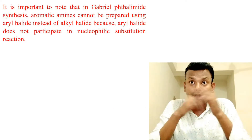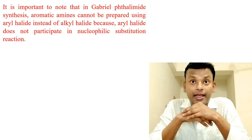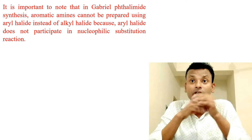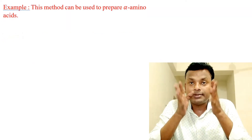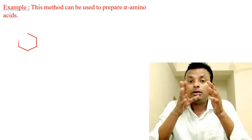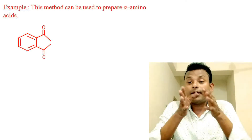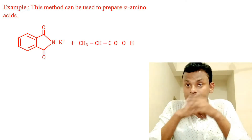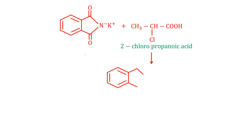It is important to note that in Gabriel phthalimide synthesis, aromatic amines cannot be prepared by using aryl halide instead of alkyl halide, because aryl halide does not participate in nucleophilic substitution reactions. For example, this method can be used to prepare alpha amino acids: the anion nucleophile reacts with 2-chloropropanoic acid to give an intermediate product, and hydrazine reacts with this product to give alanine and phthalhydrazide.